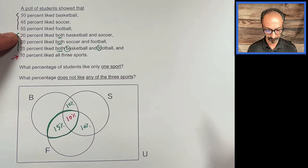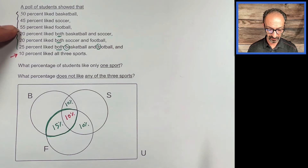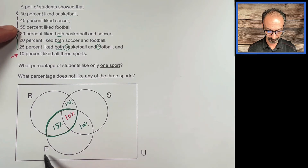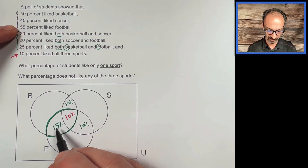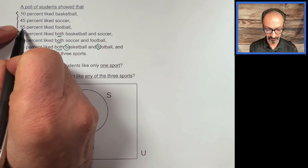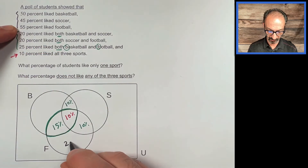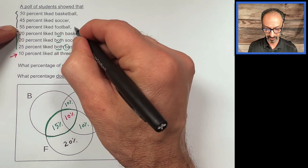Now let's go to the individual sets. 55% liked football. We already have 10, 10, and 15 inside the football circle — that's 35. So 55 minus 35 leaves 20% for the football-only region.